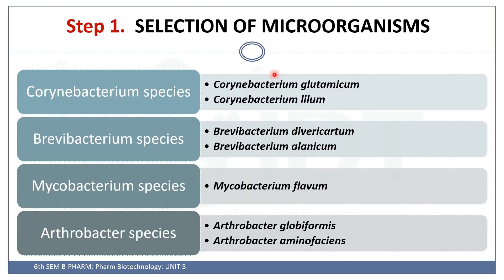We start with the first step: selection of microorganisms. There are different species of microorganisms which can be used for the production of glutamic acid. Like Corynebacterium species — examples include Corynebacterium glutamicum and Corynebacterium lilium. Then Brevibacterium species: Brevibacterium divaricatum and Brevibacterium flavum. Also Mycobacterium species like Mycobacterium flavum.